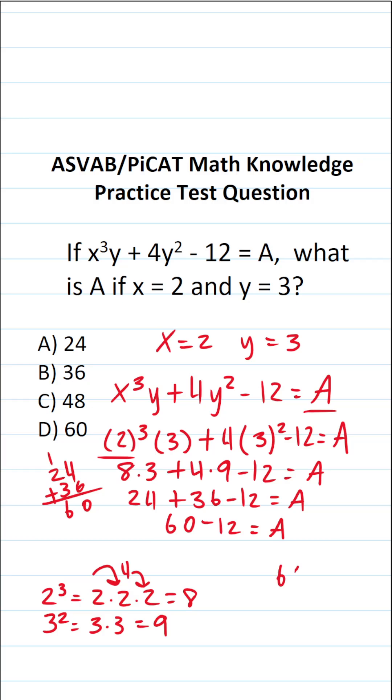And last but not least, I'm going to do 60 minus 12 off to the side. Again, I know many of you could do that mentally, but we have 0 minus 2. We can't do that. So we're going to borrow. This is going to become 5. This becomes 10. 10 minus 2 is 8. 5 minus 1 is 4. So we can see A is going to be 48. So the answer to this one is C.